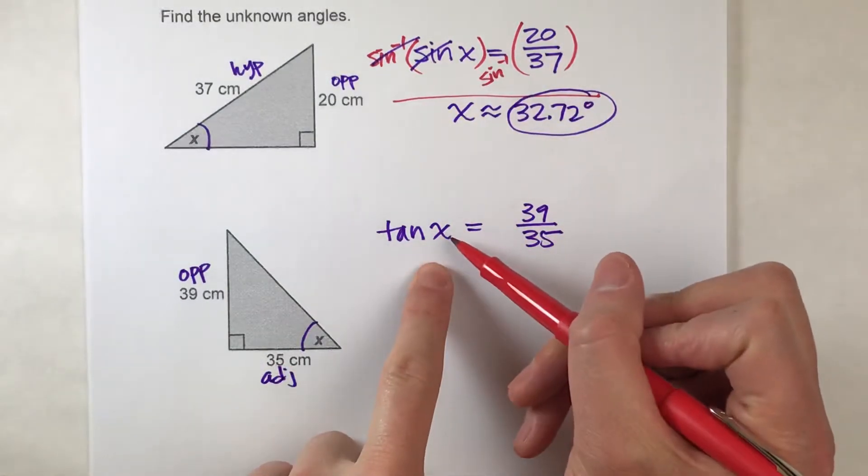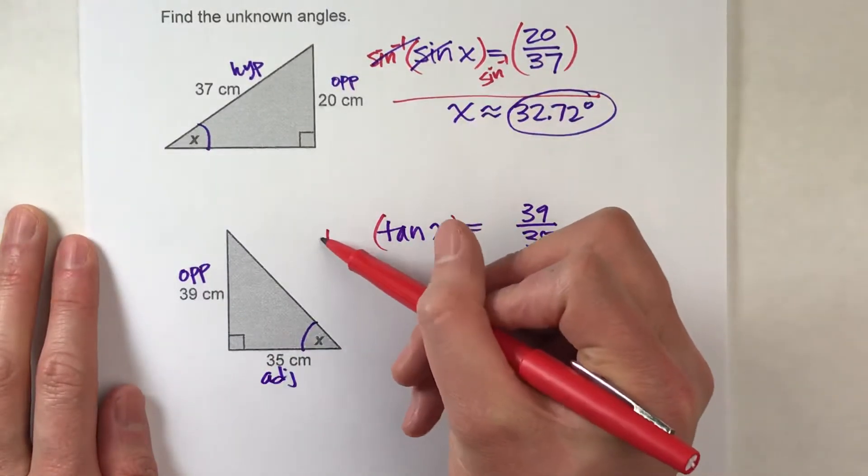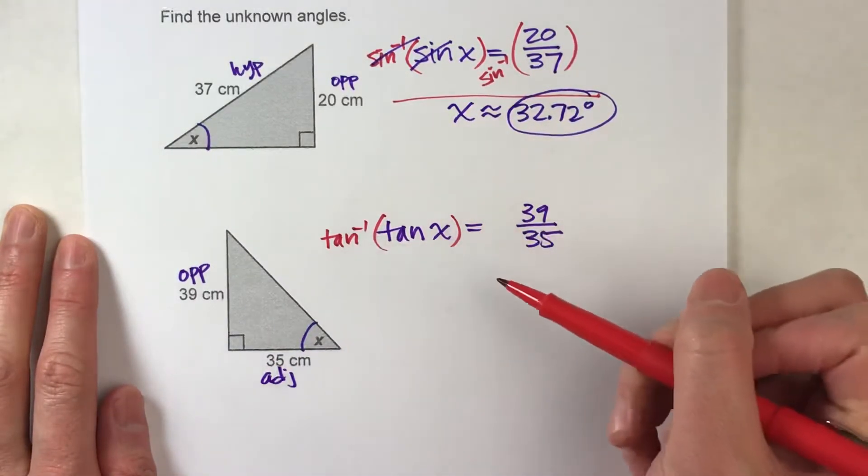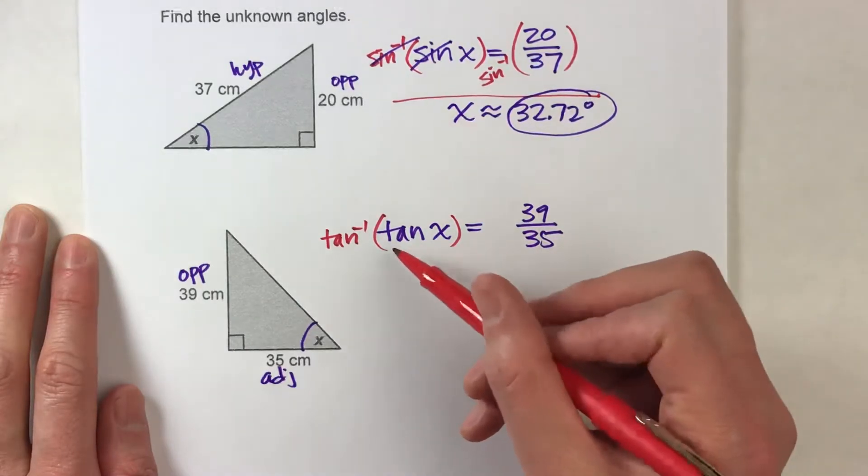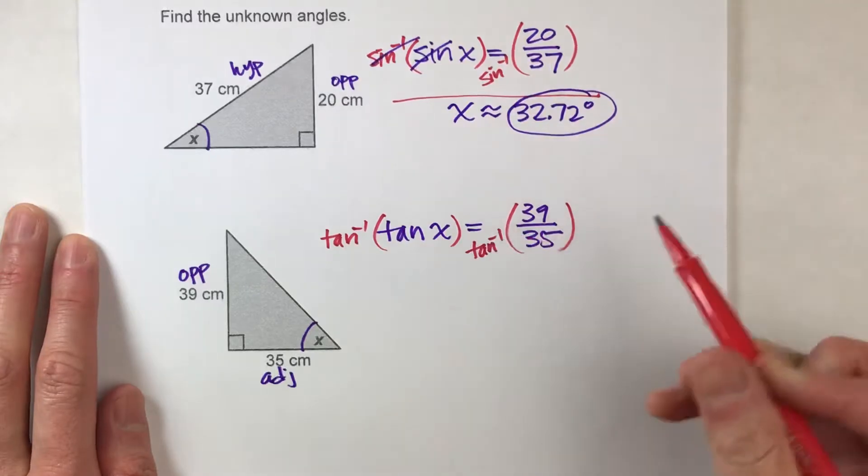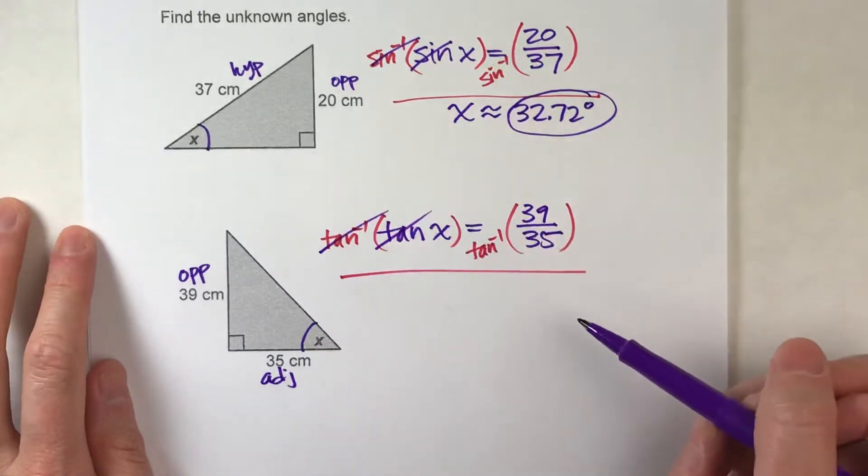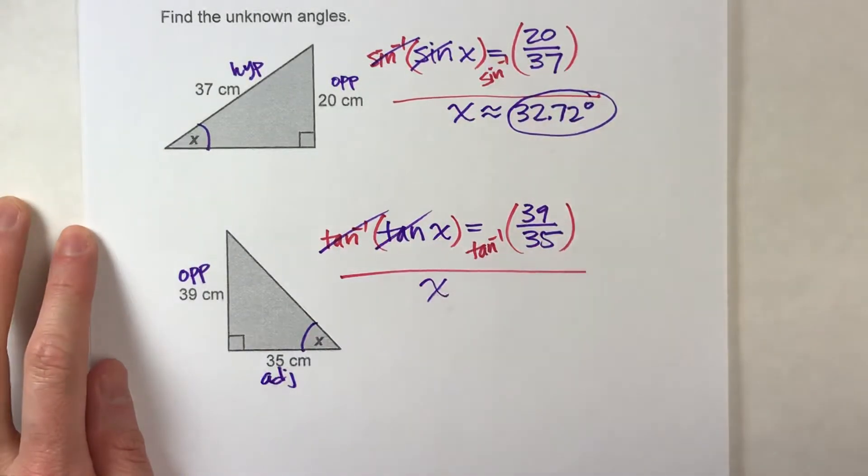So we're going to do the inverse tangent over here. But what I do to one side, I have to do to the other. So let's see what happens. Inverse tangent of tangent, undoes it, and I'm left with just x over here.